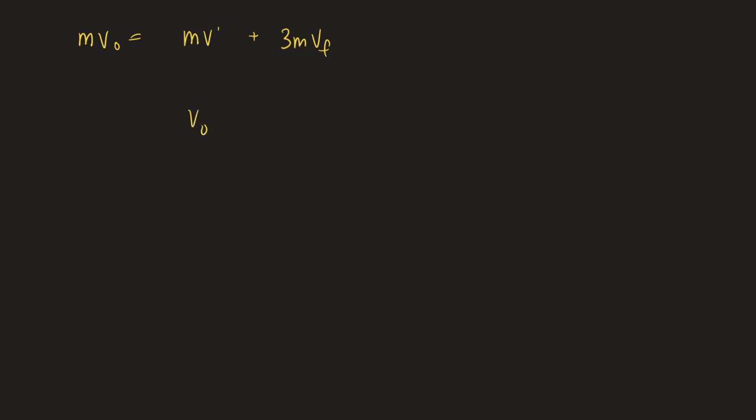So MV0 equals MV prime plus 3M V final. Let's simplify that. Get rid of the M's. So V0 equals V prime plus 3VF. I don't like the prime. I hate it. But that's what they want us to use. Why do you get rid of the square? This is the momentum equation. I'm going to do the kinetic energy in just a minute. So the kinetic energy is 1/2 MV0 squared. And that has to be equal to 1/2 MV prime squared plus 1/2 3M V final squared. In this one, all the 1 halfs go and all the M's go. So I get V0 squared equals V prime squared plus 3V final squared.